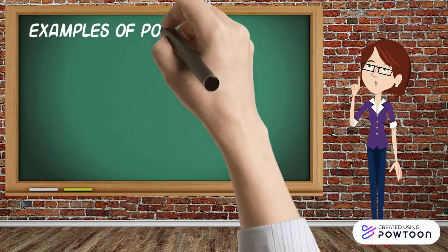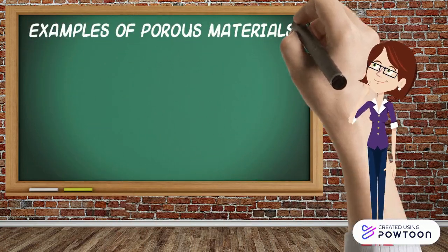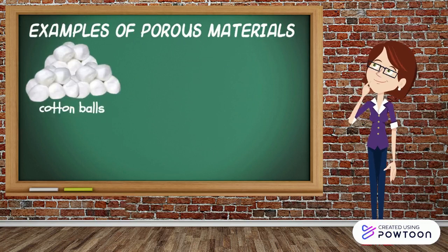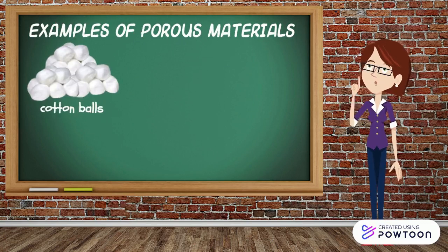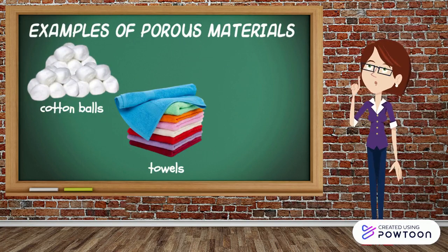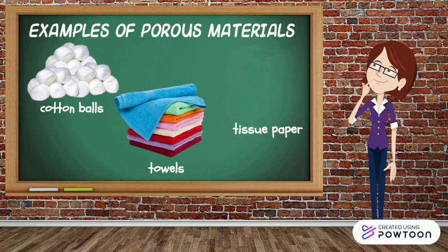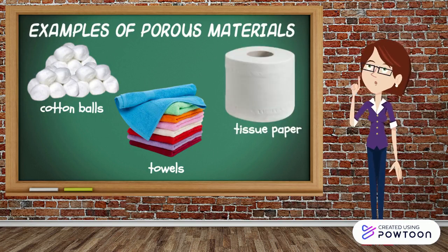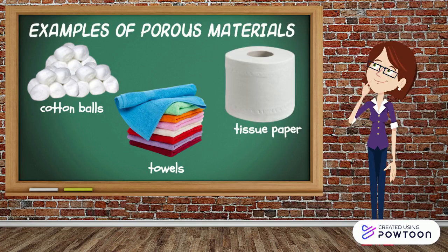What are the examples of porous materials? We have cotton balls, towels, and tissue paper. Most of these materials are made of cloth or paper.